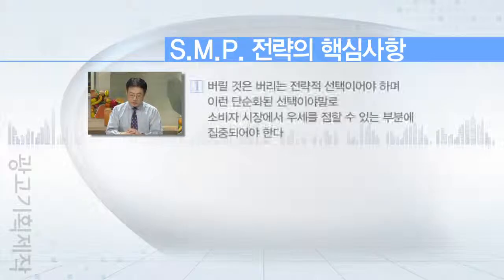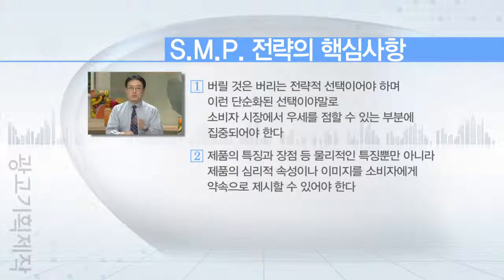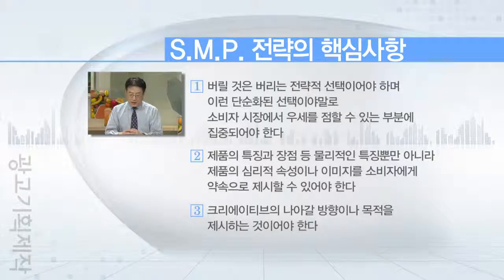S&P 전략이 쓰여질 때 핵심 사항 세 가지가 있습니다. 첫째는 버릴 것은 버리는 전략적 선택이어야 한다는 것, 둘째는 제품의 특징을 알릴 수 있는 명확한 약속을 해야 한다는 것, 셋째는 크리에이티브에 나아갈 방향이나 목적을 제시할 수 있어야 한다는 것입니다. 이 전략이 많이 쓰이는 이유는 소비자들이 많은 이야기를 들어도 기억나는 것은 한두 가지밖에 없기 때문입니다.